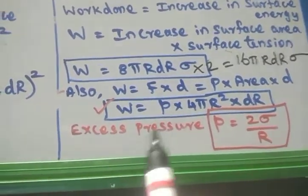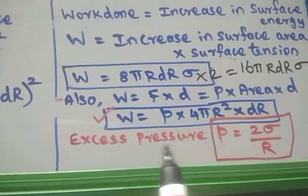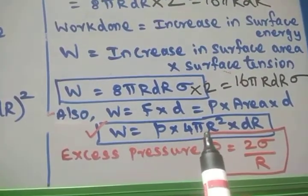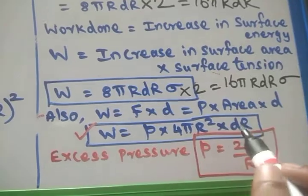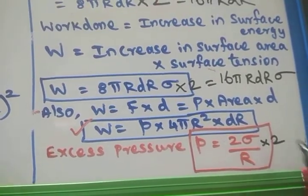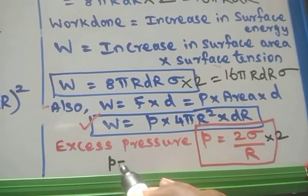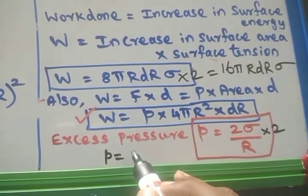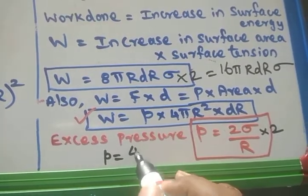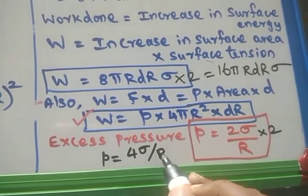Finally, equating the two expressions for work done, we get the answer. The excess pressure inside the soap bubble is 4 sigma by R.